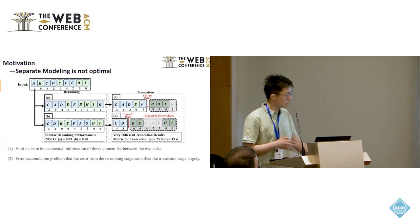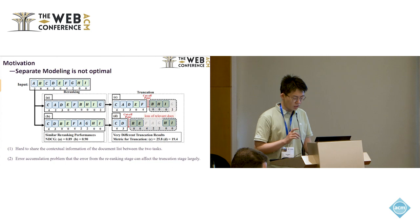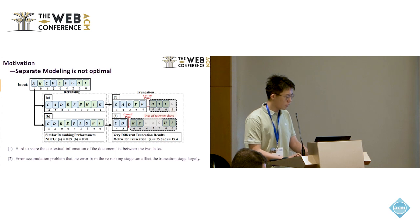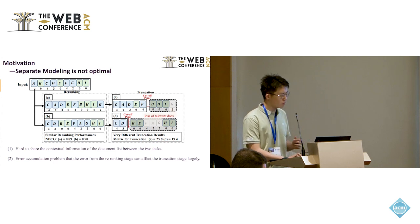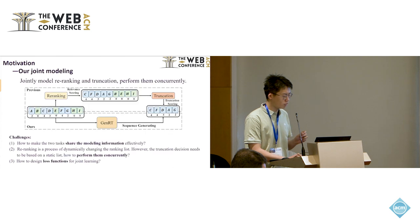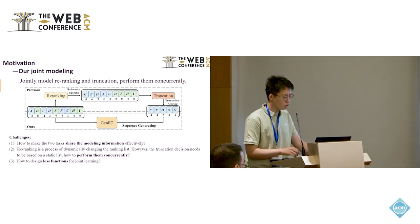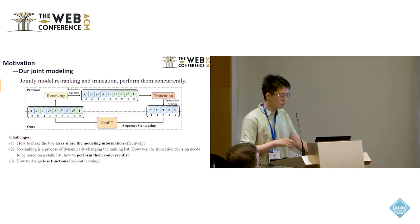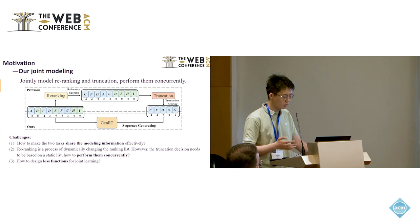In fact, previous separate modeling is not optimal. First, it is hard to share the contextual information of the document list between the two tasks. Second, the error accumulation problem that the small error from the re-ranking stage can affect the truncation stage largely. In this paper, we aim to jointly model re-ranking and truncation and perform them concurrently. Our model can generate the final list that has been re-ranked and truncated.